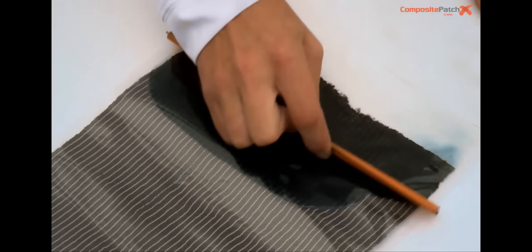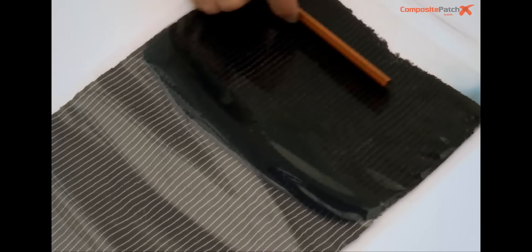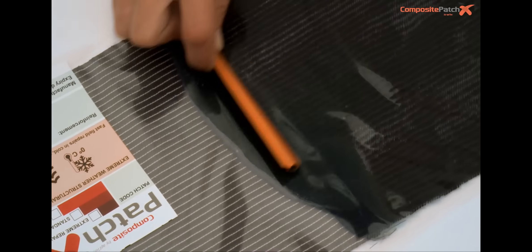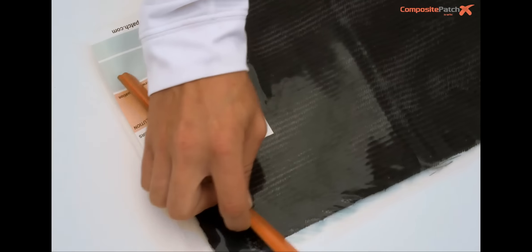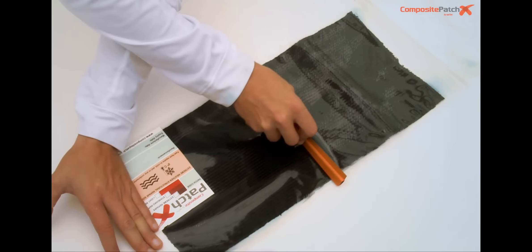Spread the resin onto the fibre using the clip. Make sure the fibre is evenly wetted. The colour should change when properly wetted.